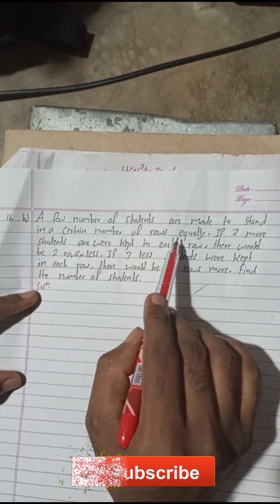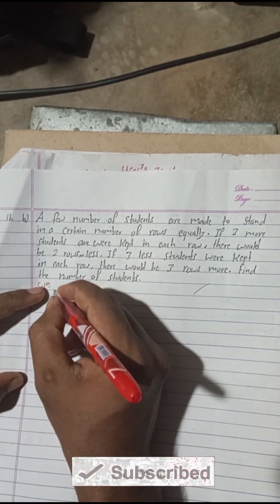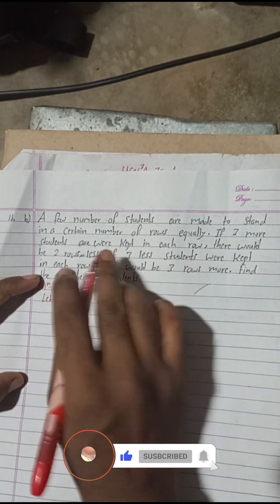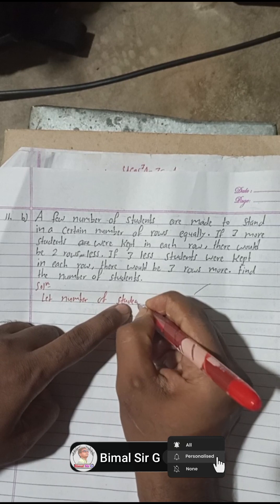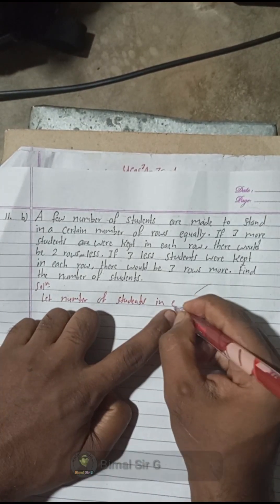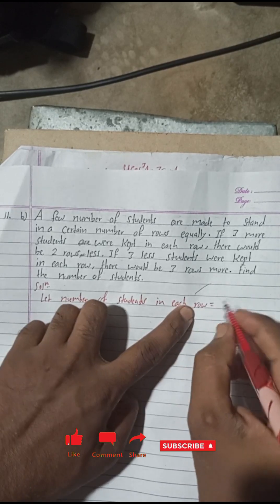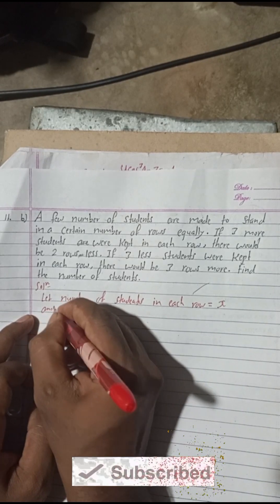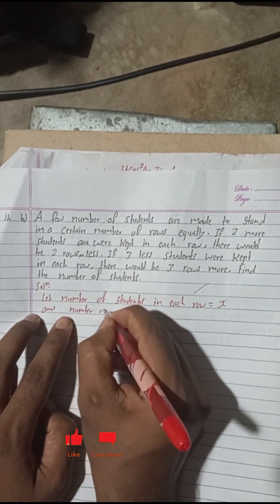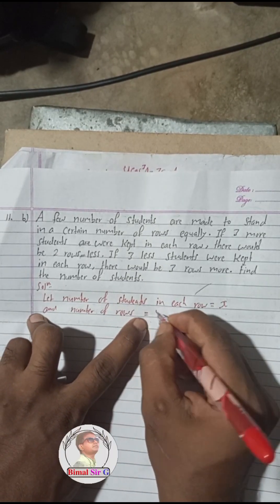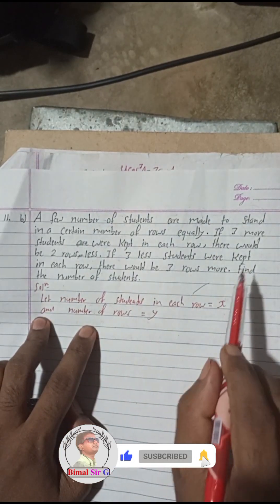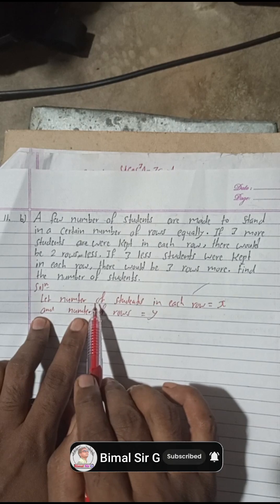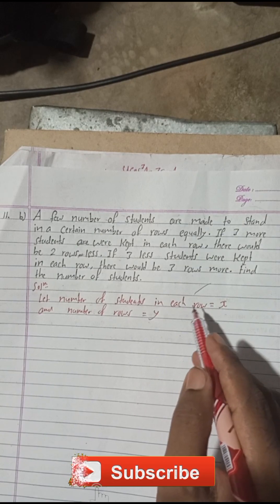Solution: A few number of students are made to stand in a certain number of rows equally. We suppose here: let the number of students in each row be equal to x, and the number of rows be equal to y. There are three more students kept in each row, so we suppose that number of students in each row is x and number of rows is y. Now by the first condition: